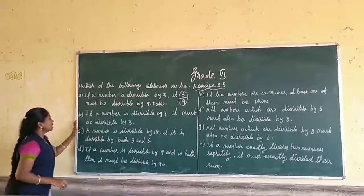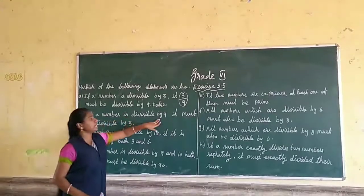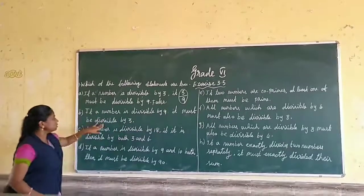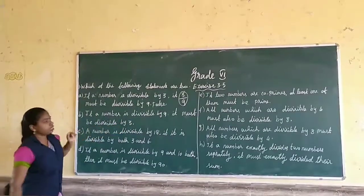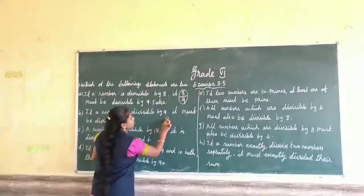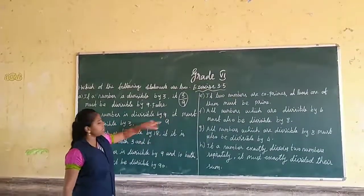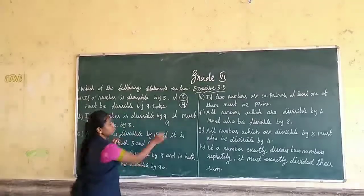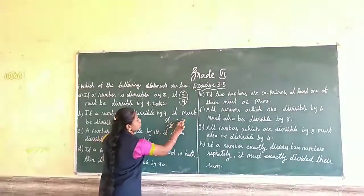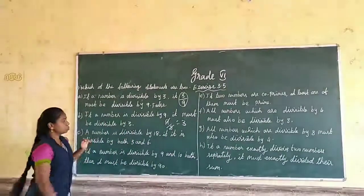Next statement: if a number is divisible by 9, it must be divisible by 3. This is true. To verify, I take the number 9. 9 is divisible by 9, and it is also divisible by 3 — if you divide 9 by 3, you get 3. So it is true.